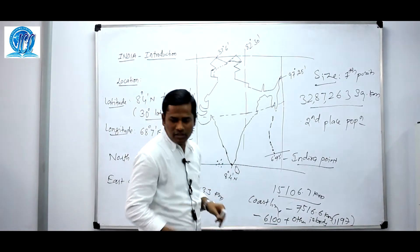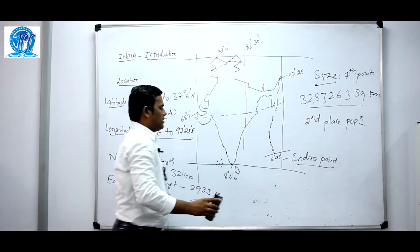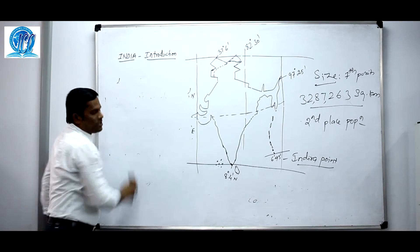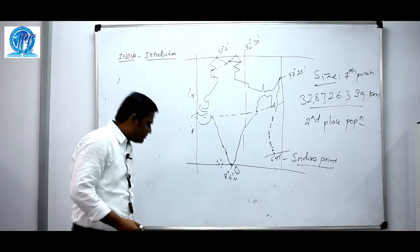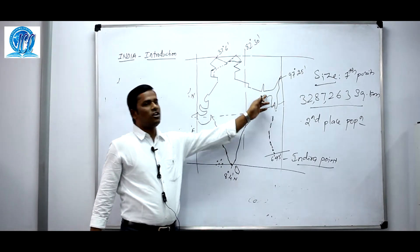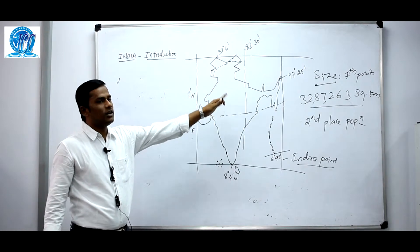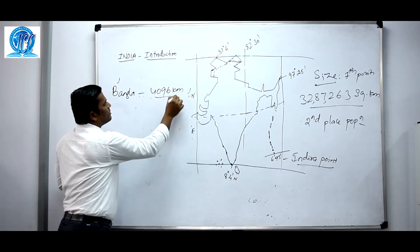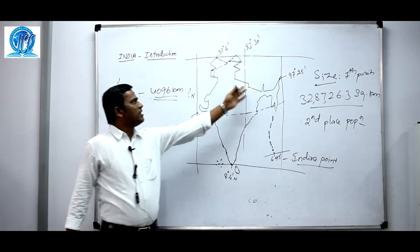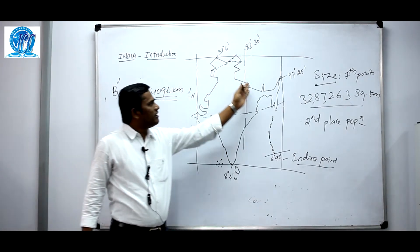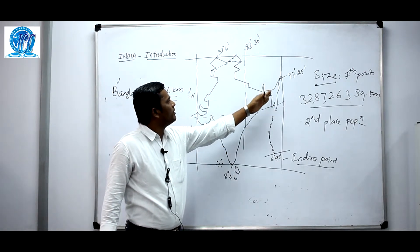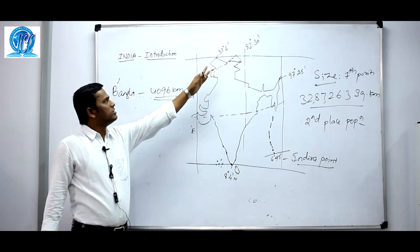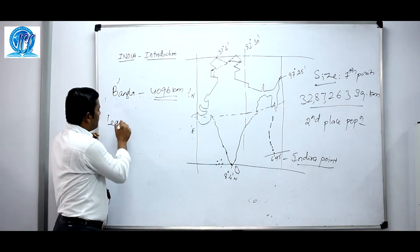Bangladesh has the longest border with India at 4,096 km. Next comes China, then Pakistan, then Nepal, then Myanmar, then Bhutan. Afghanistan has the least border with India at 106 km.